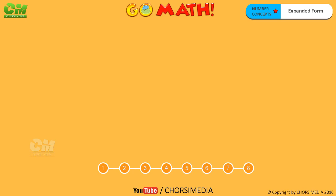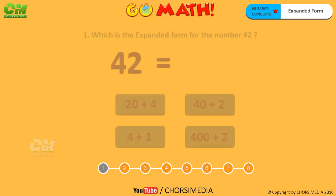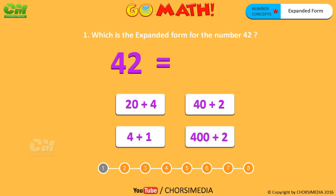Go Math expanded form. Which is the expanded form for the number 42? The digit 4 is in the tens place, so the value of 4 is 40. The digit 2 is in the ones place, so the value of 2 is 2. Together, the expanded form for the number 42 is 40 plus 2. You are right, the correct answer is 40 plus 2.